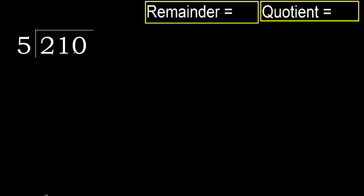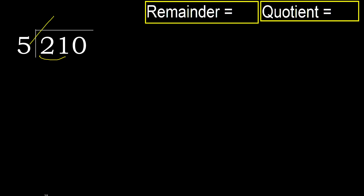210 divided by 5. 2 is less, therefore next. 21 is not less, therefore with 21: which number multiplied by 5 is nearest to 21 but not greater?